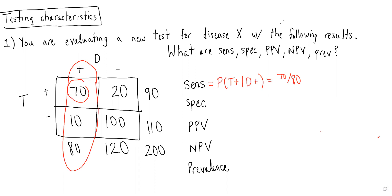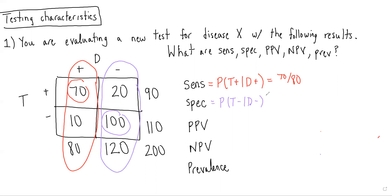For specificity, we remember this is the probability of getting a negative test result given you do not have the disease. That is equal to 100 over 120.